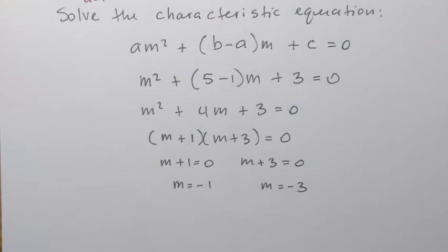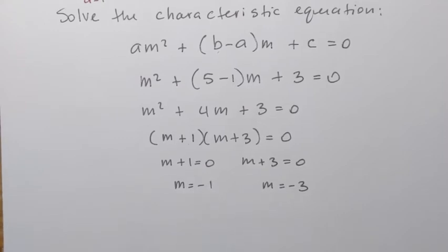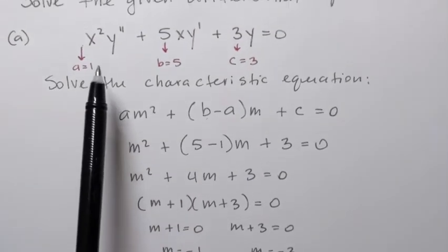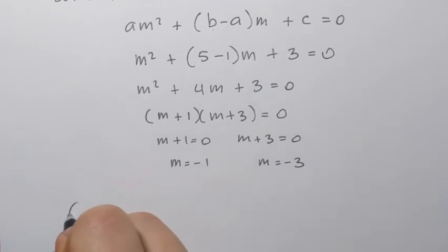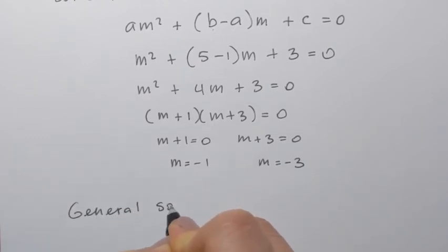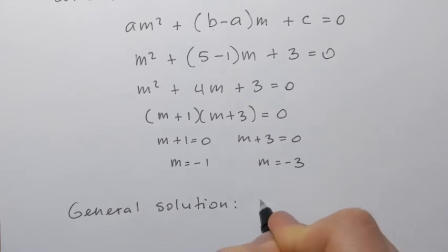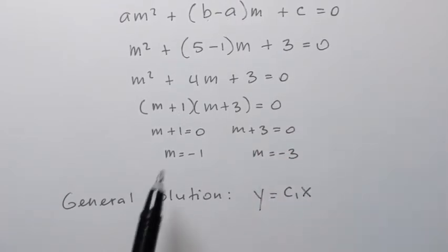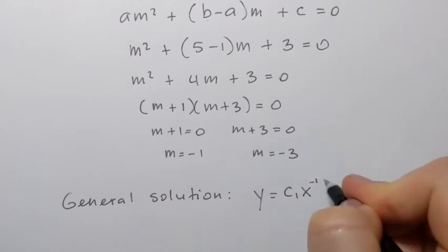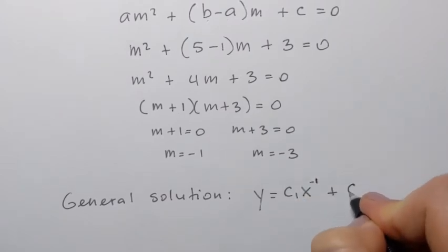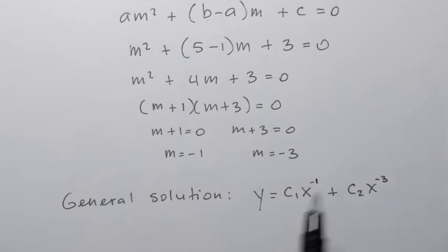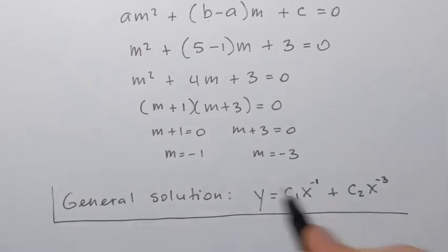We obtained two solutions — it's always going to be two solutions. They're distinct, meaning different, and they're real numbers. When we get two distinct real solutions, the general solution to our differential equation is: y equals c1 times x to the power negative 1, plus c2 times x to the power negative 3. That is the general solution to the given differential equation.